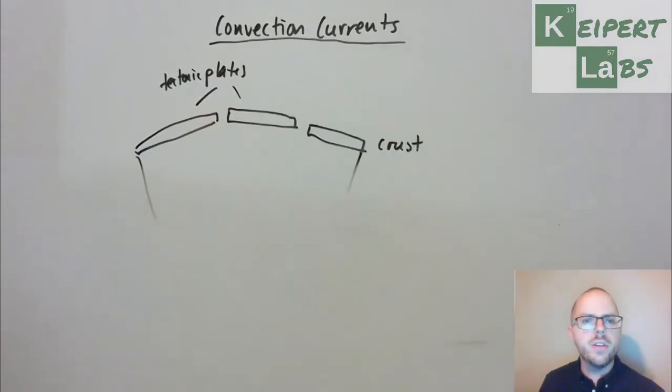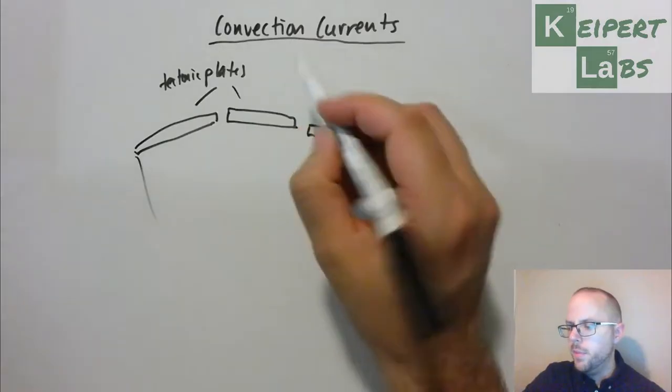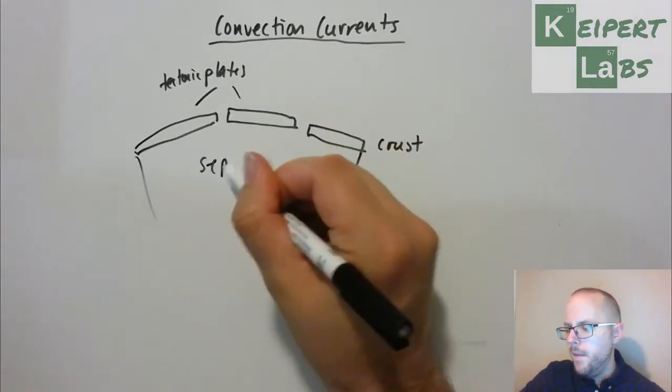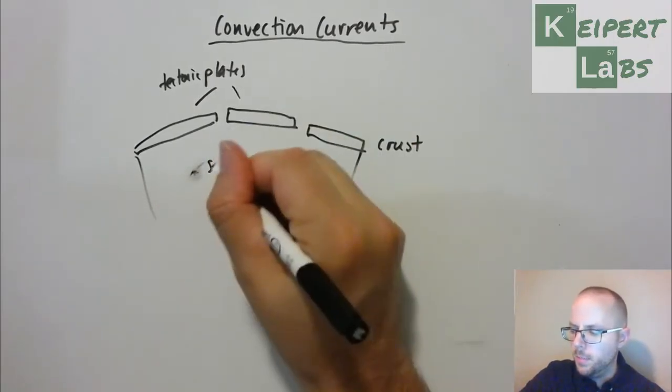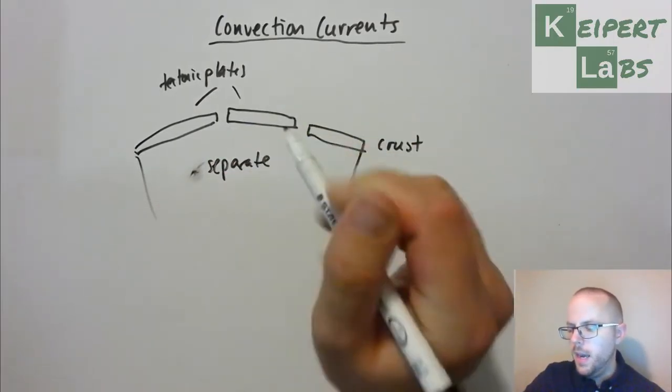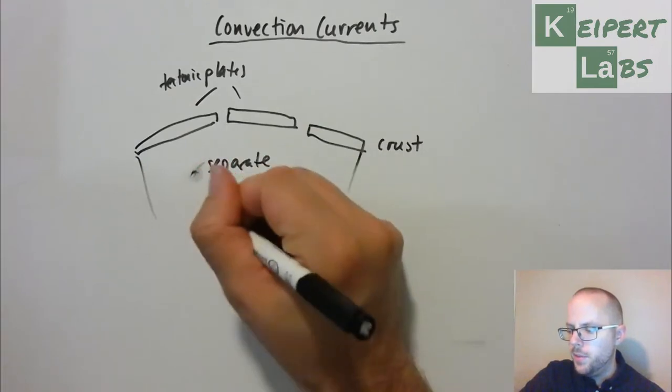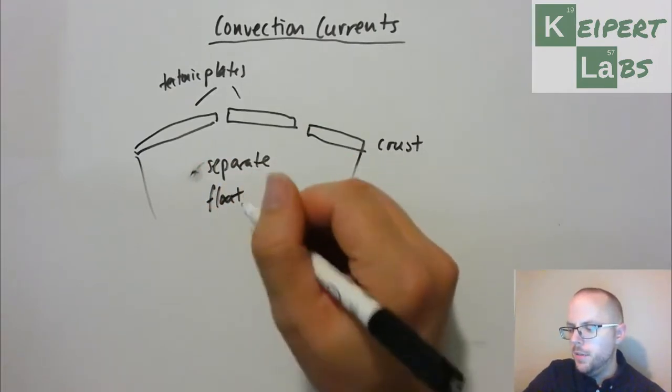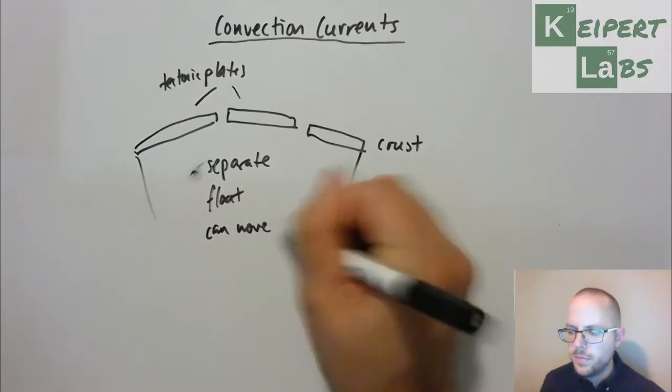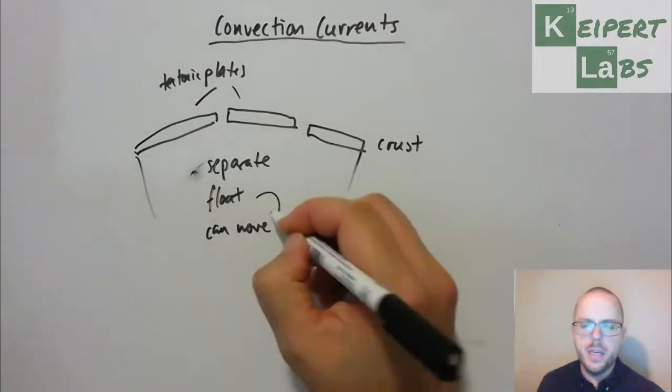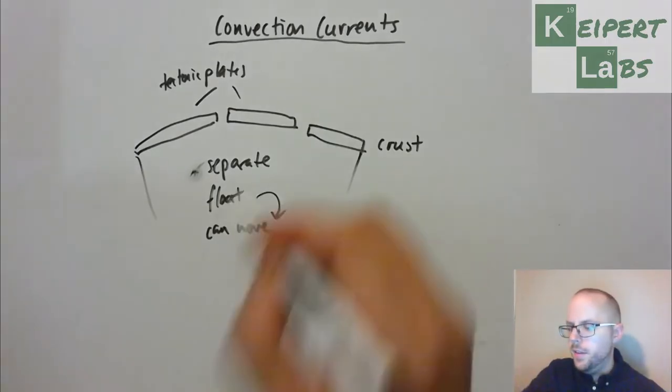They're sections of the crust that are separate from one another. They float on the layer underneath, and they can move, which stems from the idea that they float and that they're separate.